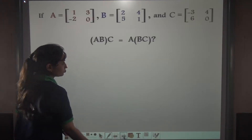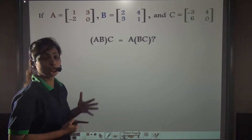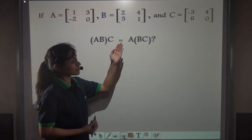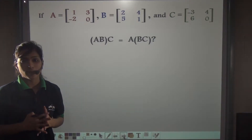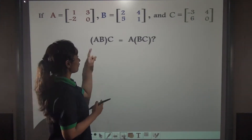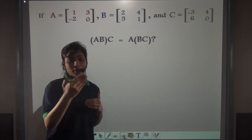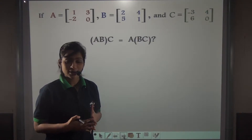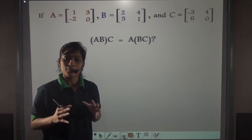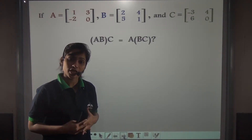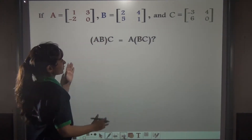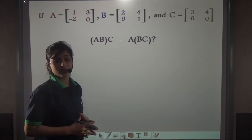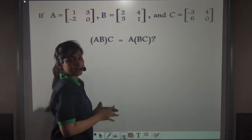Here we have given three matrices A, B and C. Do you think that AB into C will give you the same result as A into BC? If we take normal numbers, say 2, 3 and 4 — multiplying 2 into 3 and then by 4, or multiplying 3 into 4 and then by 2, gives the same result, because multiplication of normal numbers is commutative, associative, and distributive. Let us see whether these matrices satisfy this equation. If they do, we will say that multiplication of matrices is associative.